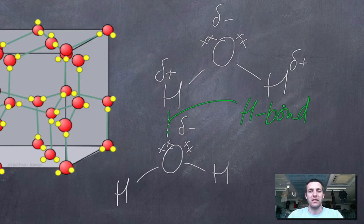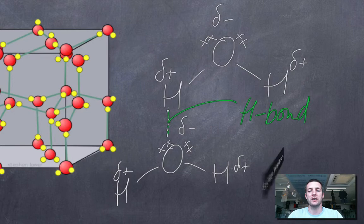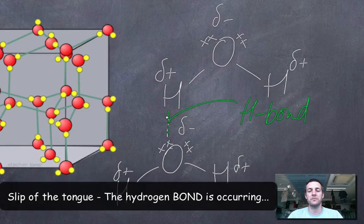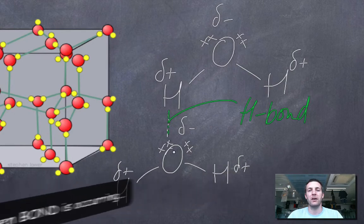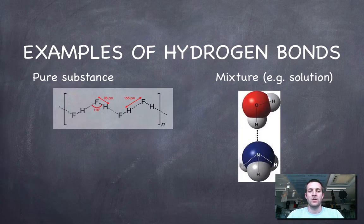As a rule, hydrogen bonds are about a tenth of the strength of a covalent bond — much weaker than covalent bonds, but by far the strongest intermolecular force. When drawing diagrams, show the electronegativity difference using partial charges, show that you know there's a lone pair, and show the hydrogen bond occurring between the hydrogen and the lone pair on the highly electronegative element.